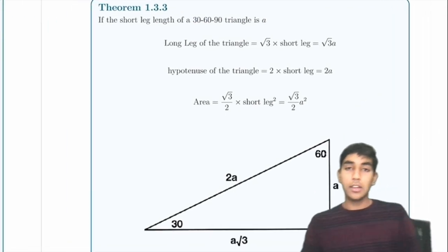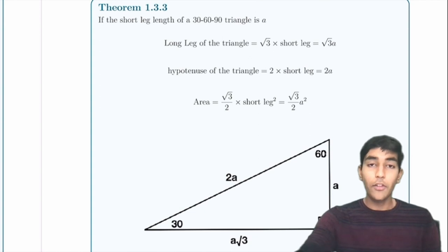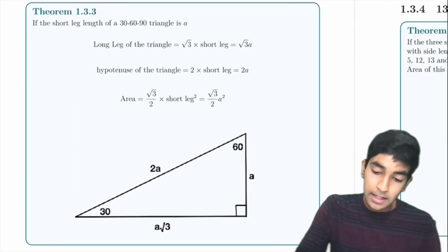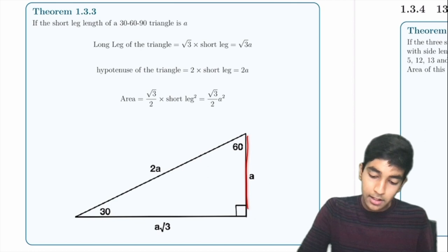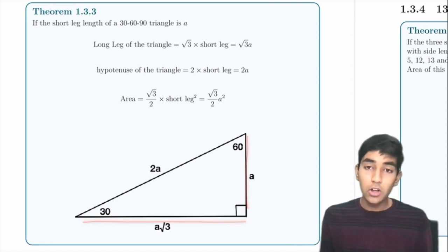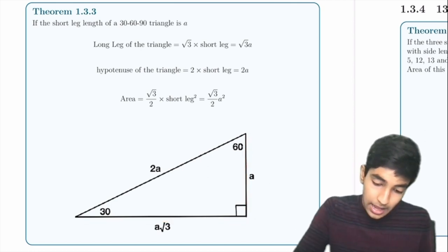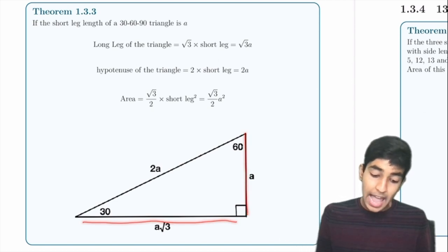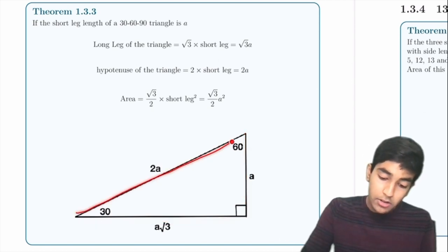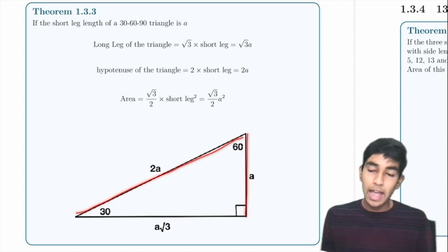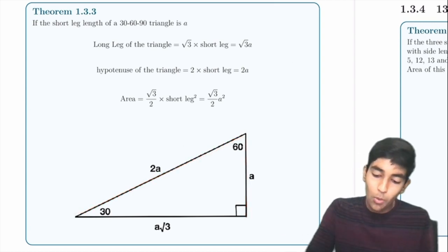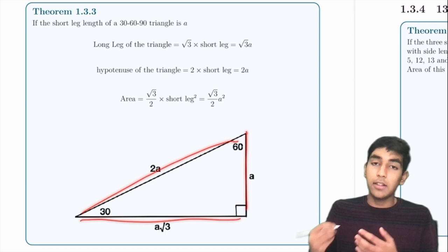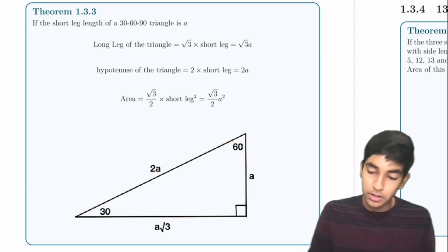Next is the 30-60-90 triangle. The long leg is √3 times the short leg, and the hypotenuse is 2 times the short leg. The ratio of sides is 1 : √3 : 2 in a 30-60-90 triangle, and this is definitely worth knowing.